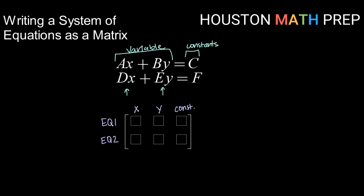From equation 1, our coefficient for x is a, so we're going to enter a in row 1 column 1. From equation 1, our coefficient for y is b — that's going to be in row 1 column 2. Finally, we take our constant from equation 1, which is c, into our constant column. Now for equation 2: the coefficient for x is d, the coefficient for y is e, and the constant is f. That is how we take the information from a system of equations and place it into a matrix.